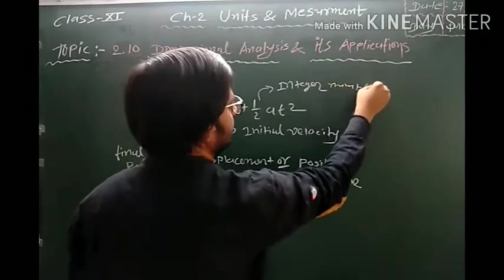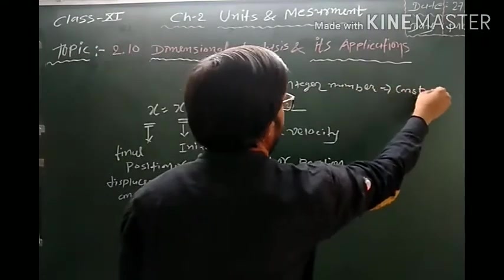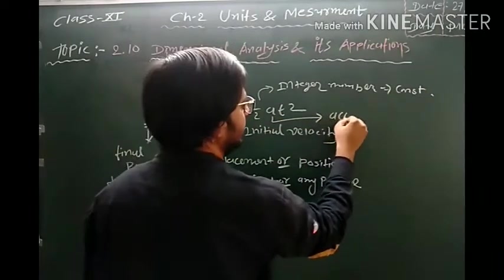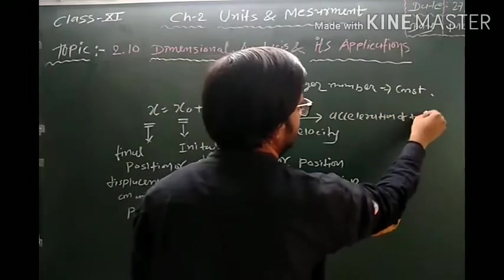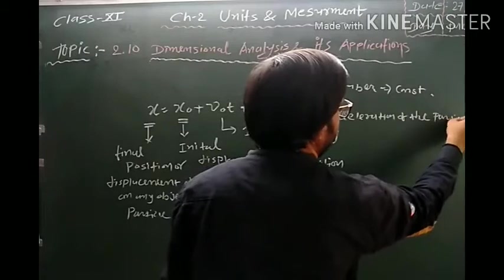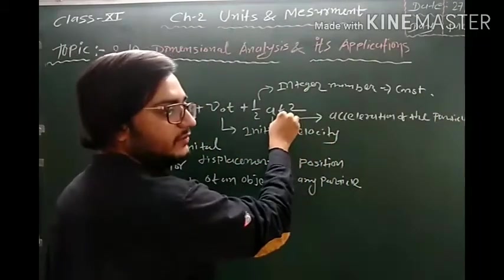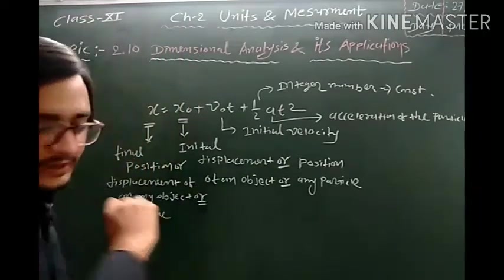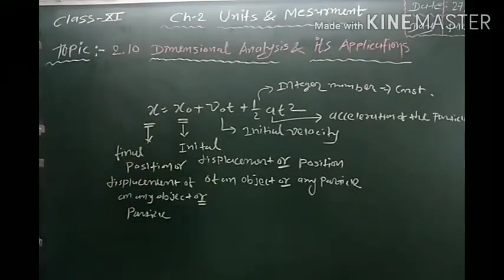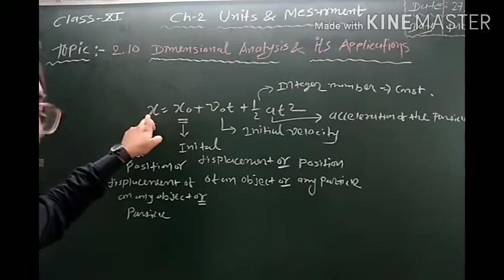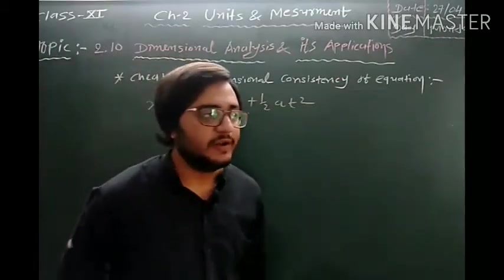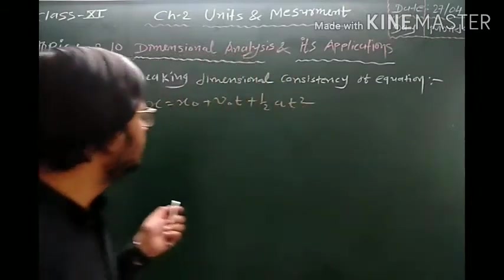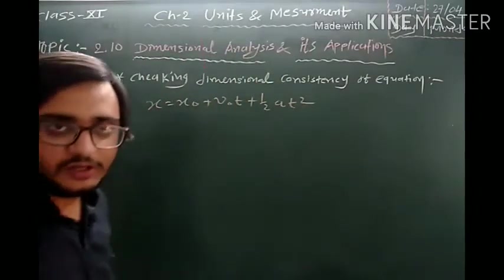Half is a dimensionless integer constant. A is the acceleration of the particle and T is time. Dimensional consistency means checking whether the dimensions on both sides of the equation are correct or not. So let us check the dimensions of LHS and RHS.